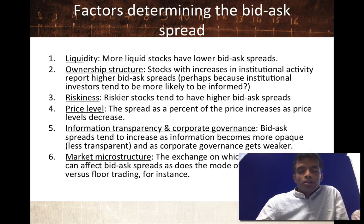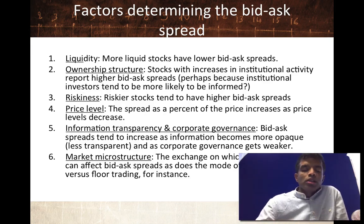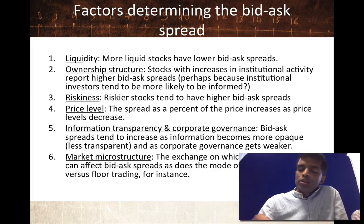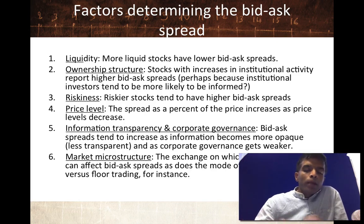Companies with weaker corporate governance and more opaque information structures tend to have larger bid-ask spreads. That's no surprise, because everybody's unsure about who you're trading with, and because there's so much opacity, you as a dealer worry that the person you're trading with knows a lot more than you. And finally, the exchange or the market structure seems to matter. There was a well-known study about 20 years ago about NASDAQ and NYSE stocks that noticed that spreads were sticky in exchanges — unusually around quarters and halves — which led to changes including decimalization and smaller spreads.